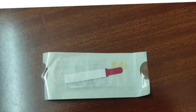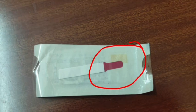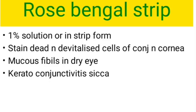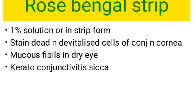The next strip is the rose bengal strip. As you can see, it is a little pinkish in color compared to the fluorescein strip. It comes in 1% solution or in strip form. It is used to stain the dead and devitalized cells of conjunctiva and cornea, and also the mucous fibrils present in dry eye — so it is mainly indicated in keratoconjunctivitis sicca. One more similar strip is the lissamine green strip, whose indications are the same as rose bengal — to stain the dead and devitalized cells of conjunctiva and cornea.